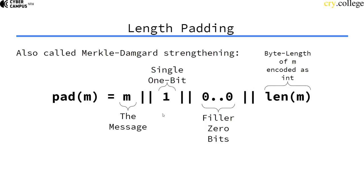So what is usually done is called length padding, sometimes also called Merkle-Damgård strengthening. The message we want to hash is taken, then a bit is appended, then we have zero filler bits, and then the length of the message is appended — this is the padding of the message.